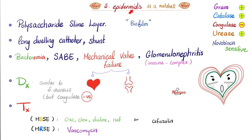In the last video, we talked about Staph epidermidis — remember the biofilm, slimy layer, long-dwelling catheters. Staph epidermidis will attach to them, causing bacteremia, subacute bacterial endocarditis, mechanical valve failure, prosthetic device failure, and sometimes immune complex-mediated glomerulonephritis. Diagnosis is similar to Staph aureus; however, Staph epidermidis is coagulase negative. Treatment: if sensitive, ox/clox/diclox/nafcillin; if resistant, vancomycin. Staph epidermidis is gram positive, catalase positive, coagulase negative, urease positive, novobiocin sensitive.